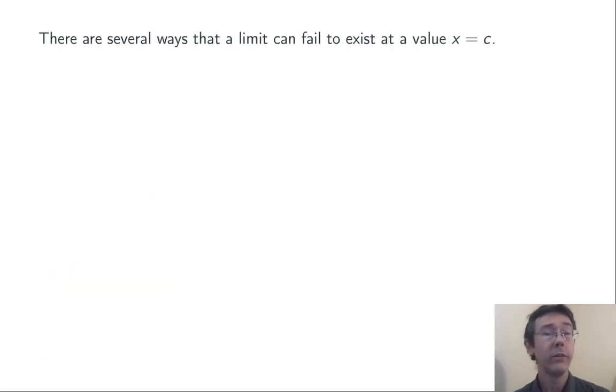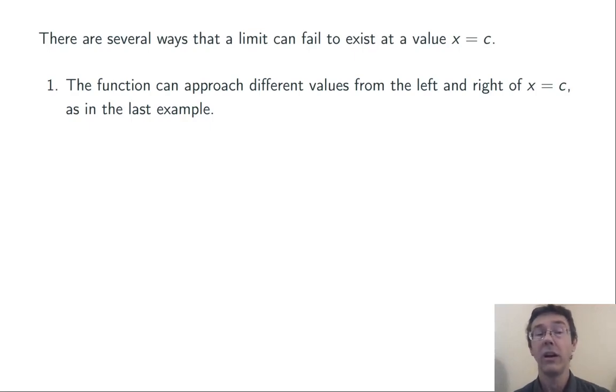We've just seen one example of a limit that does not exist. Let's talk about the various ways in which a limit can fail to exist at a value x equals c. First, is the one we just saw. The function can approach different values from the left and right of x equals c, as in the last example.